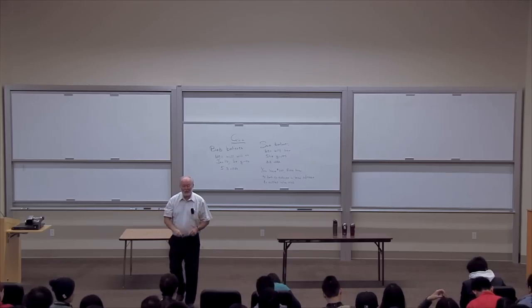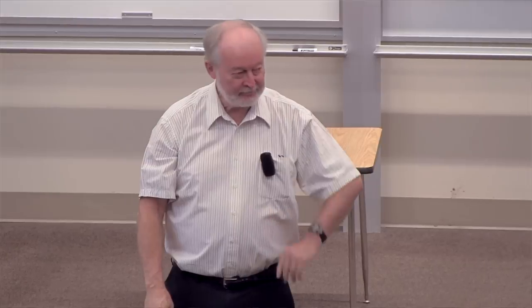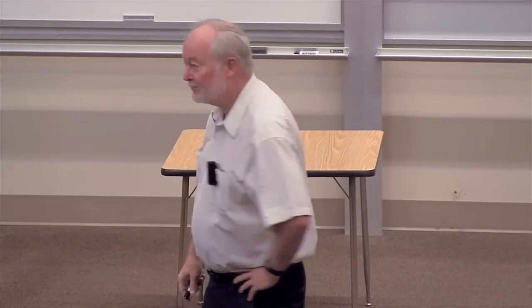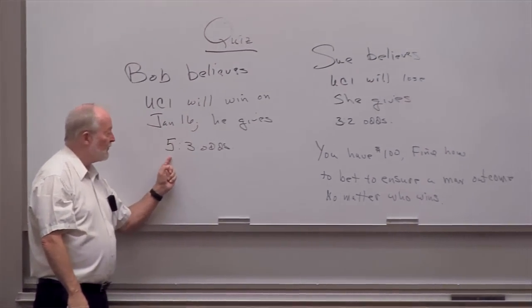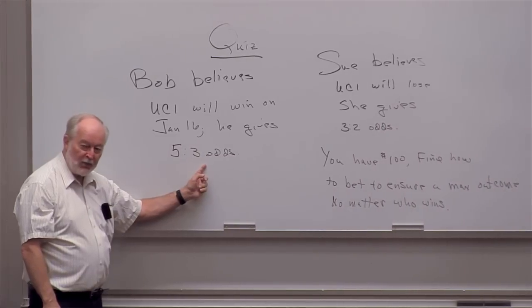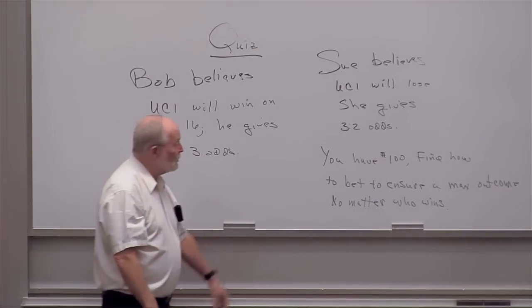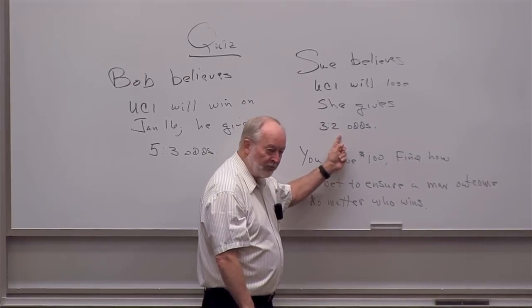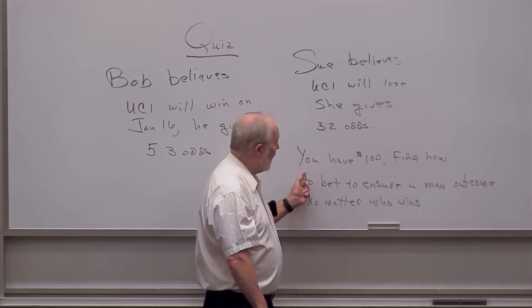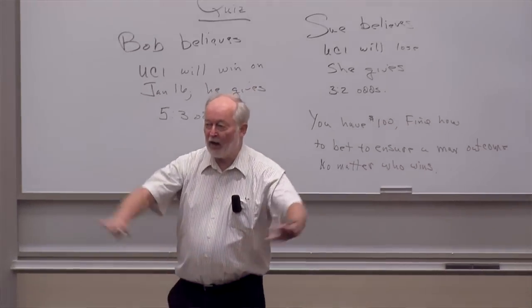Take out a sheet of paper and work out this problem. There is a basketball game on January 16th, next Thursday. Bob believes UCI will win and gives five to three odds — for every three dollars you bet with him, if UCI loses, he'll pay you five dollars. Sue believes the other way around; she gives three to two odds, meaning for every two dollars you bet with her, if she loses, she pays you three. You have a hundred dollars — find how to bet to ensure a maximum outcome no matter what happens.